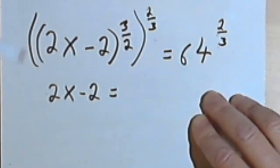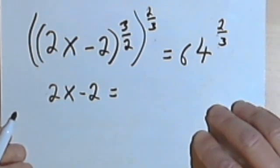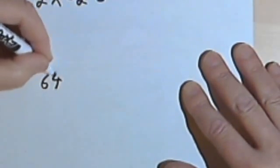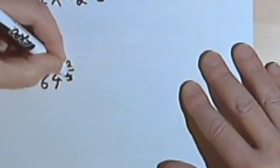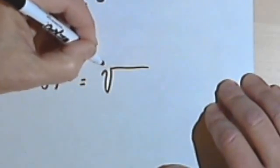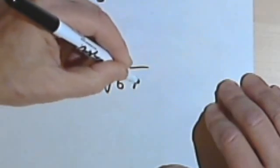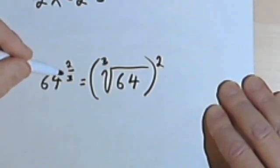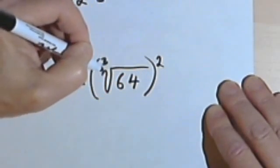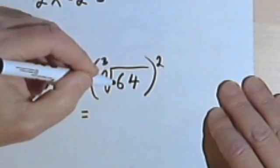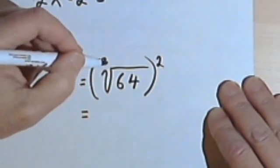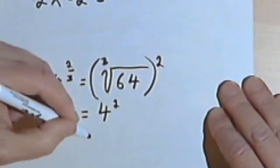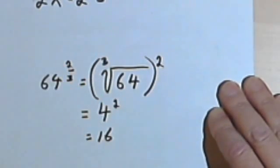So you can put that in your calculator, but let's do a little exercise and figure out what 64 to the 2 thirds is. So 64 to the 2 thirds is going to be the same as the cube root of 64, and I'm going to square that whole thing. Well, the cube root of 64 is 4. 4 times 4 times 4 is 64. So I'm going to have 4 squared, and 4 squared equals 16.